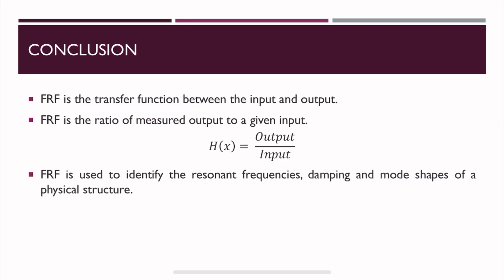To conclude: FRF is a transfer function between input and output, basically the ratio of output to input. It is used to identify the natural or resonant frequencies, damping, and mode shapes of a physical structure. Thank you for watching, and have a great day.